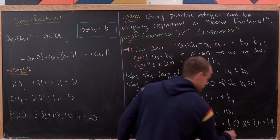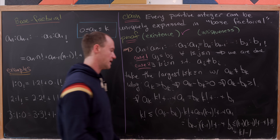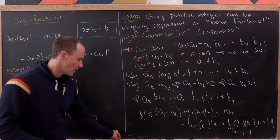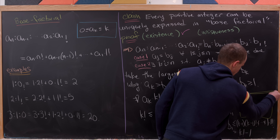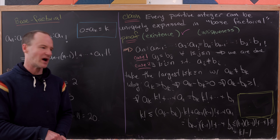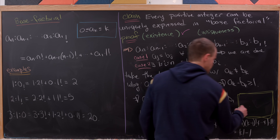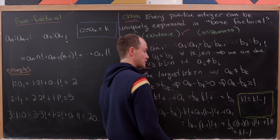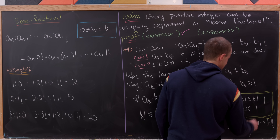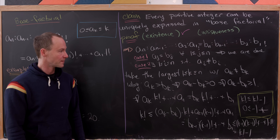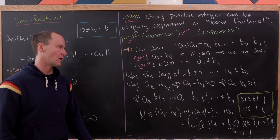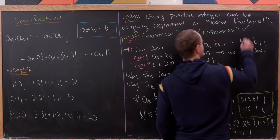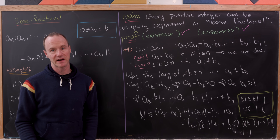By that same identity from before, that sum equals k! − 1. So putting the inequality together, we get k! ≤ k! − 1, or equivalently 0 ≤ −1, which is a clear contradiction. This contradicts the possibility of having any different digits at all, meaning case one is the only possible case — and so we have uniqueness in our expression of numbers in this base factorial number system. And that's a good place to stop.